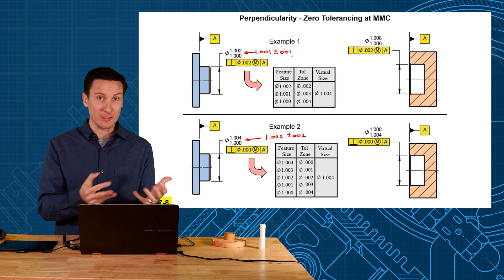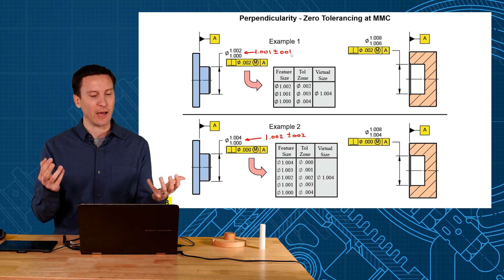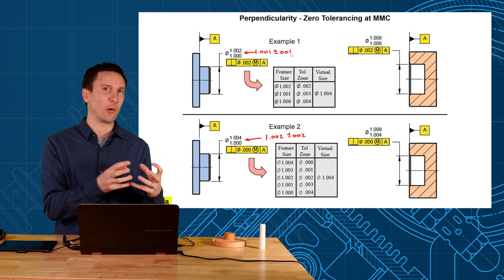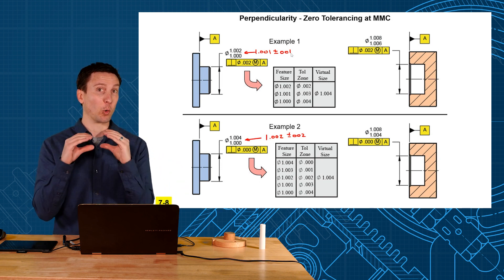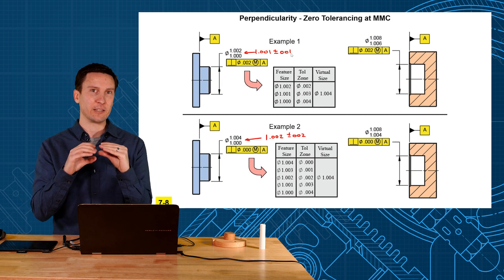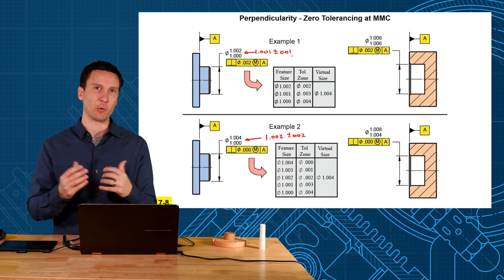Now at first, it looks scary when you see the zero, and you're like zero tolerance, you can't make that. You can, because it's zero at MMC. So at worst case, you have to be perfectly perpendicular, but as that pin gets smaller, you can pick up that bonus tolerance.